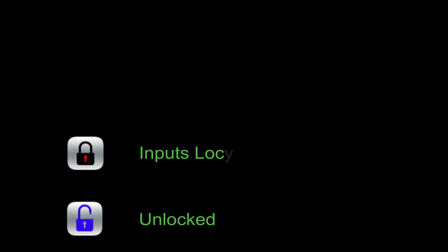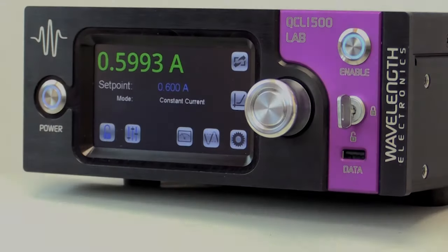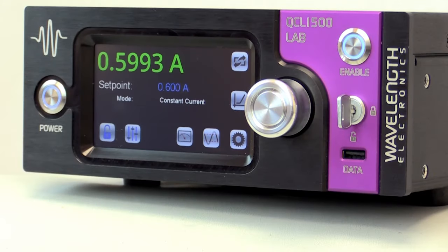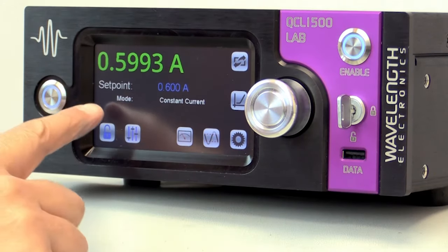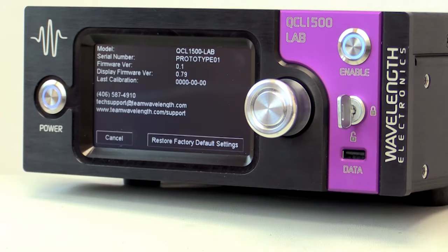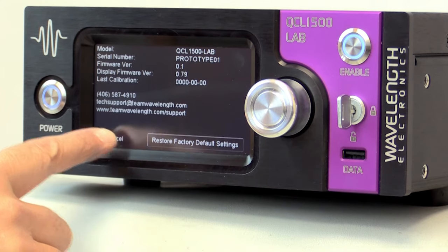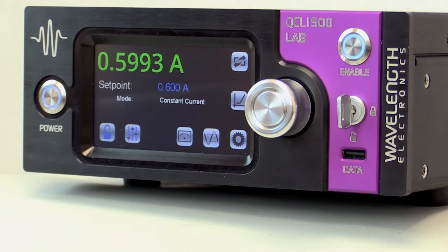The front panel inputs can be locked to avoid accidental changes to the settings. At any time, swipe the screen firmly from left to right to display the QCL instrument serial number, calibration status, and Wavelength technical support contact information.